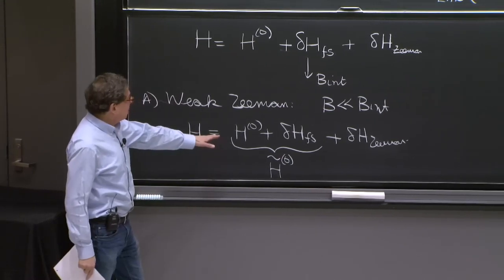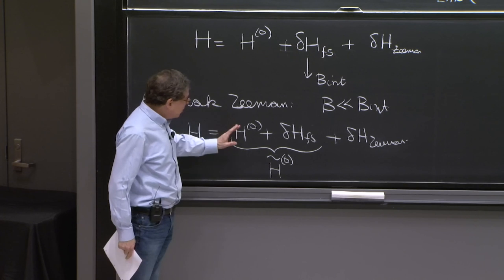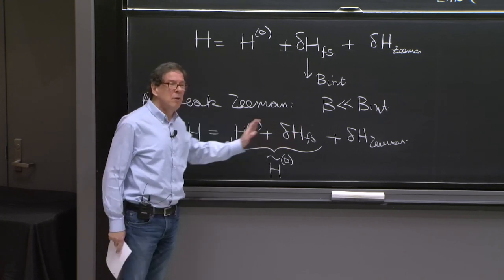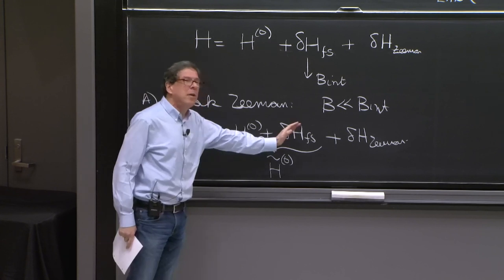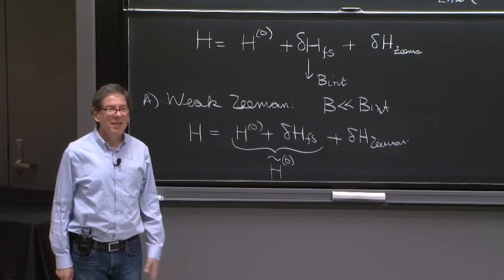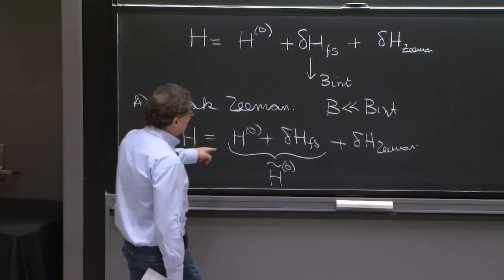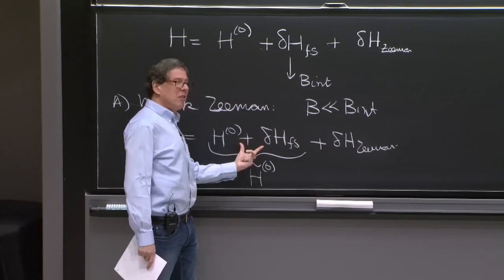And the Zeeman term adds its perturbation. Yes, you've solved for the fine structure coupling and the shift. So this is the known thing. These are going to be the known states with known energies. You only know them to first order, but you know them. And then the Zeeman effect will be a perturbation theory on this.